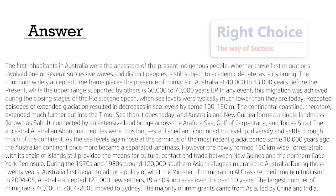In any event, this migration was achieved during the closing stages of the Pleistocene Epoch, when sea levels were typically much lower than they are today. Repeated episodes of extended glaciation resulted in decreases in sea levels by some 100 to 150 meters. The continental coastline therefore extended much further out into the Timor Sea, and Australia and New Guinea formed a single landmass known as Sahel, connected by an extensive land bridge across the Arafura Sea, Gulf of Carpentaria, and Torres Strait.